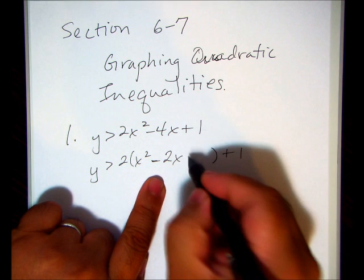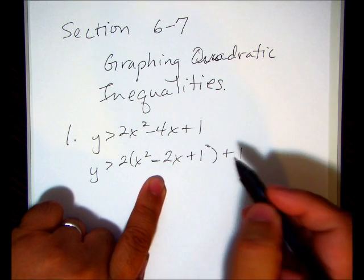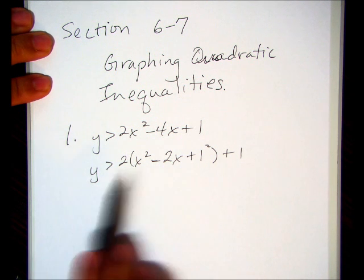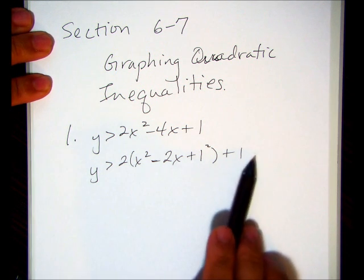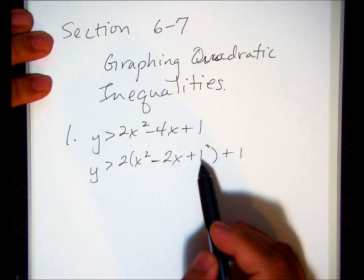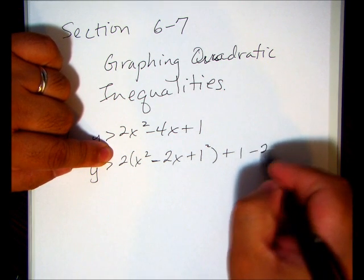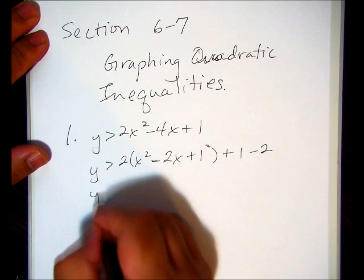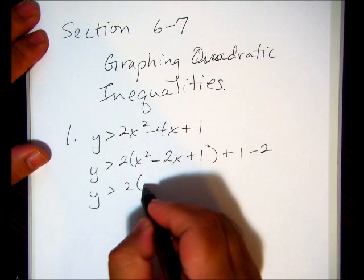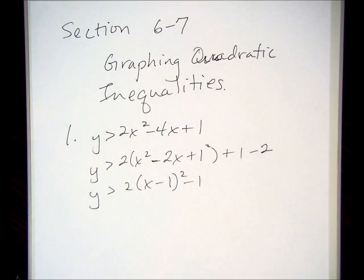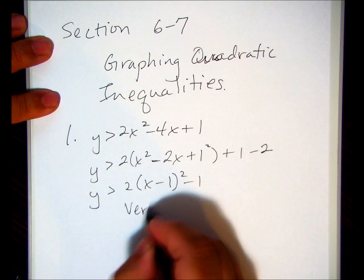Take half the middle term and square it and add it. Now to compensate for that plus 1 squared, I have to subtract out here. However, it's more than just plus 1 - it's 2 times positive 1, so it's minus 2. So we get x minus 1 squared minus 1.